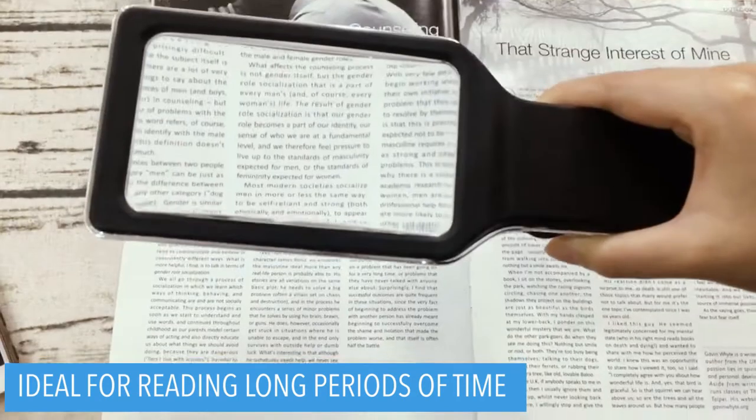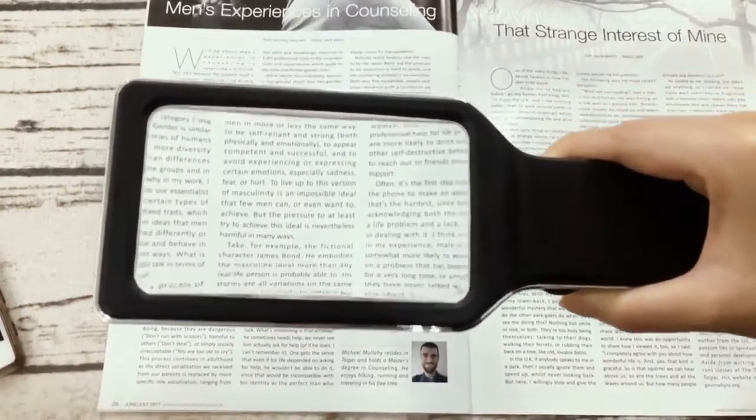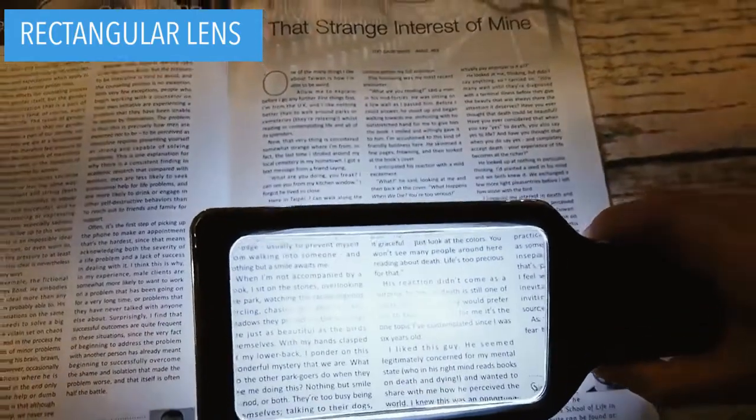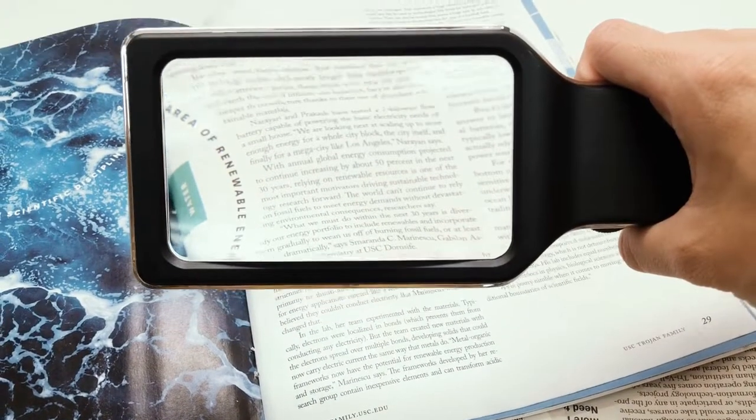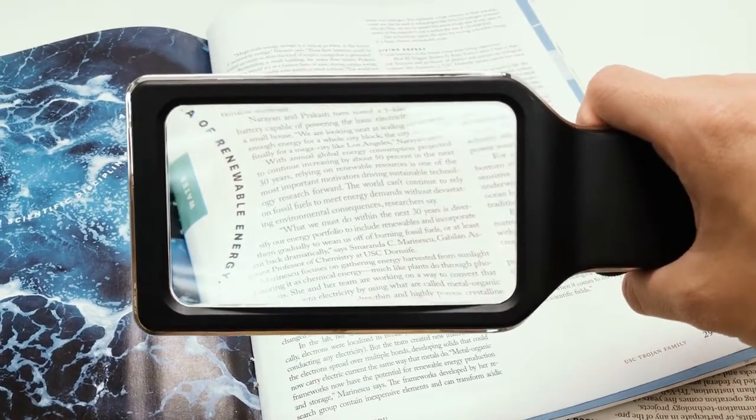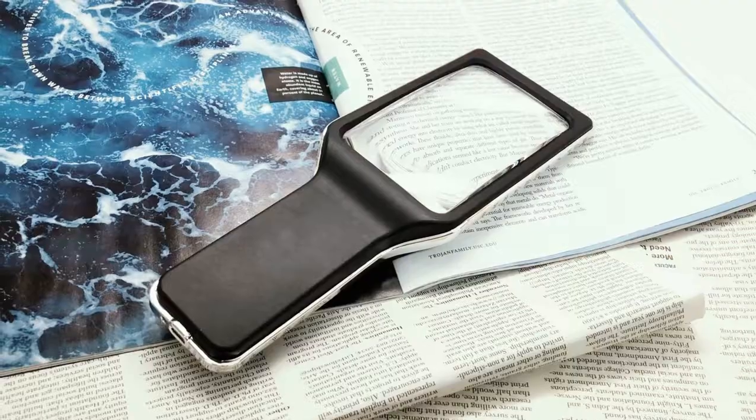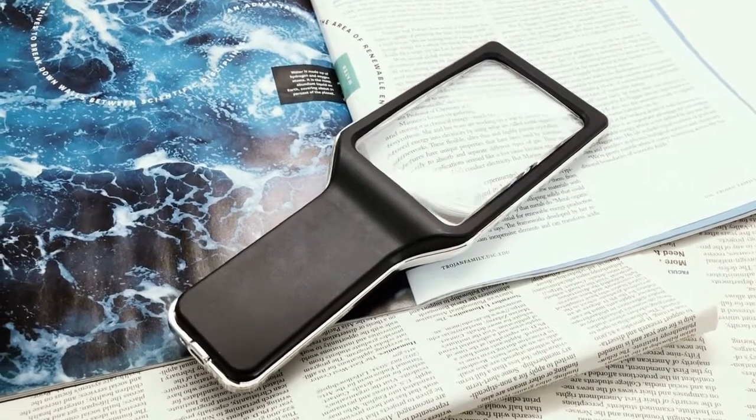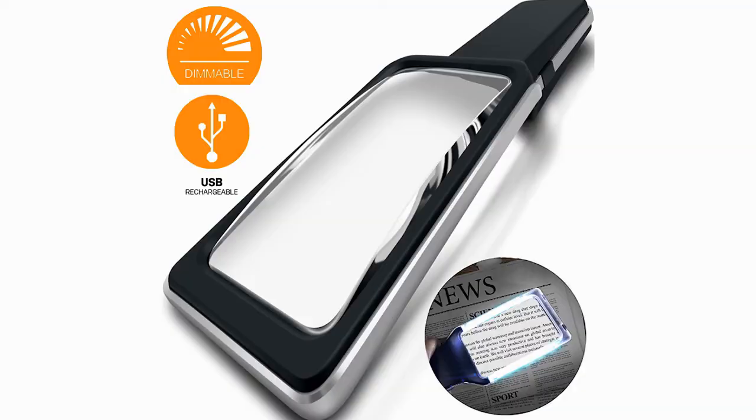The rectangular lens is especially designed to simulate the way we naturally view things from left to right. The magnifying lens covers large viewing areas without having to move your hands all the time. With its new and improved qualities, this rechargeable large handheld magnifier can help anyone.